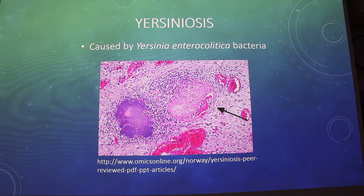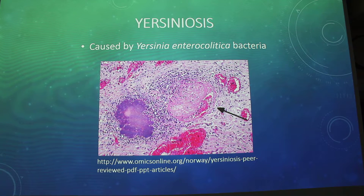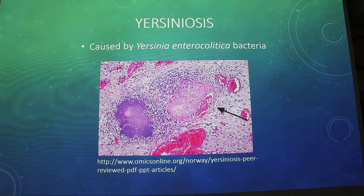The second one is Yersiniosis. It is also a bacterial zoonotic disease caused by Yersinia enterocolitica. This is also a picture of the bacteria. It is mostly carried by pigs — this one is really heavy on pigs — but it can also come from rodents, rabbits, sheep, cattle, horses, dogs, and certain strains in cats. Transmission is usually through contaminated, undercooked, or raw meat.